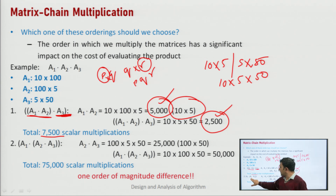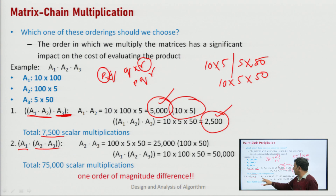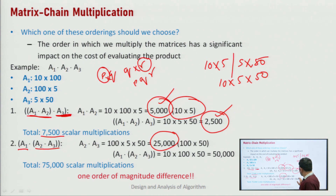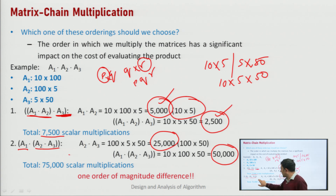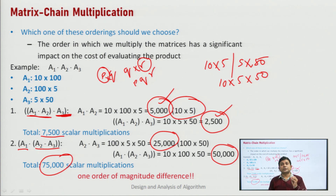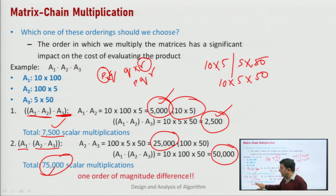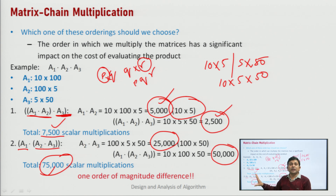In the second approach, we first multiply A2 and A3, getting 100×5×50 = 25000 multiplications. Then we multiply that result with A1, getting 50000 multiplications. Total: 75000 scalar multiplications. So with only 3 matrices, the first approach requires 7500 and the second requires 75000 — the second approach takes 10 times more computation than the first.